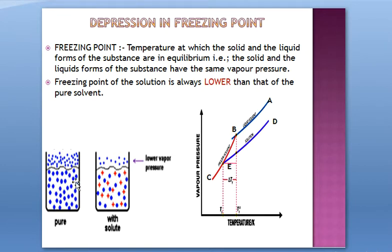Before understanding how this depression in freezing point takes place, let's see what freezing point is. It is the temperature at which the solid and the liquid forms of the substance are in equilibrium. For a layman, freezing is the temperature at which a liquid phase converts into solid phase — like we put water in a freezer, it becomes ice at a specific temperature. That temperature, in chemistry, is where the solid phase and the liquid phase are in equilibrium.